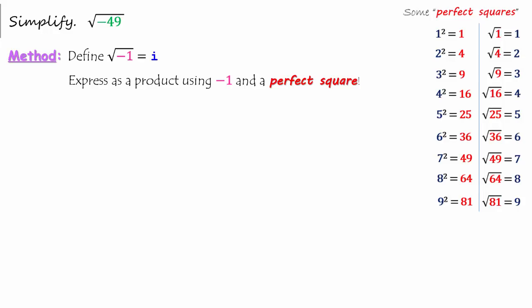Since the square root of 1 is the whole number 1, we say that 1 is a perfect square. Likewise, since the square root of 4 is the whole number 2, we say that 4 is a perfect square.